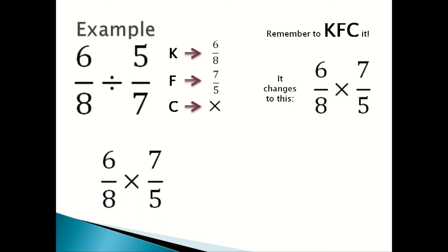6/8 times 7/5 is equal to 42/40, which can be simplified down to 21/20. So 6/8 divided by 5/7 is equal to 21/20.